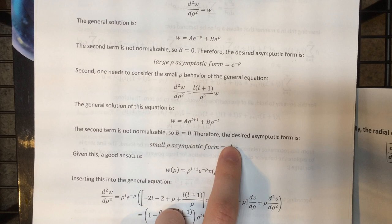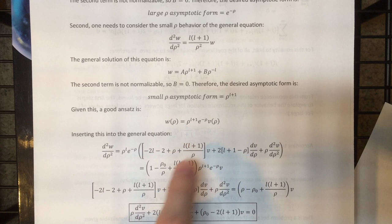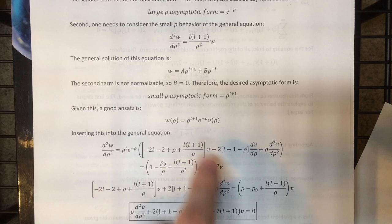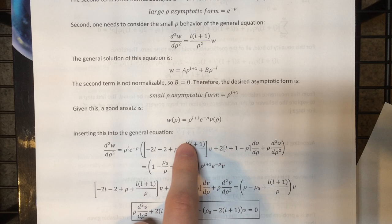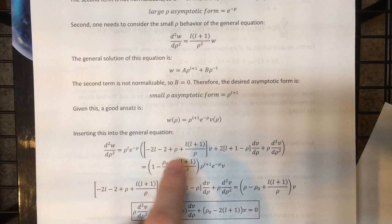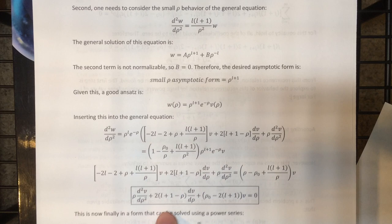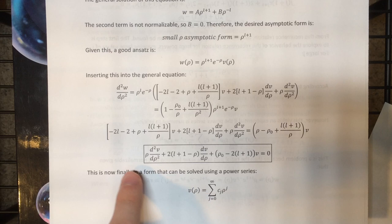You can see we've got the two asymptotic forms and then the unknown part. Because the differential equation already told us it should behave asymptotically like that, there's a good chance the differential equation will simplify when we insert this ansatz, since we've already accounted for that asymptotic behavior. When you insert it and take the second derivative and simplify as much as you can, you ultimately end up with a new equation for v of rho. It doesn't look simpler, but it actually is in that it's much more suitable for solving with a power series.